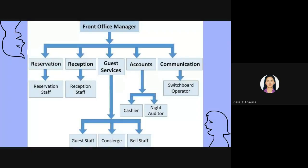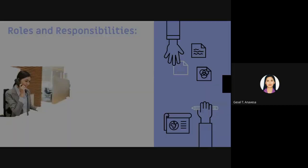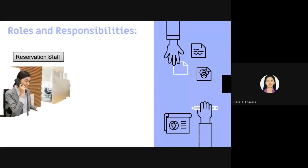Here is an example of the organizational chart of the front office department. At the top is the front office manager, who is responsible for meetings, planning, and so on. The different departments under it are reservation, reception, guest services, accounts, and communication.